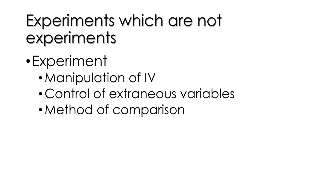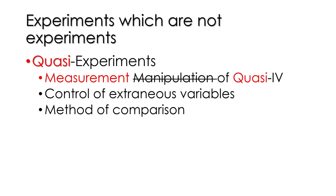Let's review experiments. Experiments have a manipulated independent variable, control of extraneous variables, and a method of comparison — covered in previous lectures. But what about experiments that aren't really experiments? What happens when we don't have manipulation of an independent variable? That minor change causes some big effects: we no longer have an experiment, but a quasi-experiment.